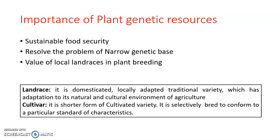Why are plant genetic resources important? It is very important to study them for sustainable food security. Here we have two key words: 'sustainable' means to make something continuously available for future generations, and 'food security' means the availability of food for everyone. So sustainable food security means food is available to the current generation and to future generations as well. We must use plant genetic resources in a way that food production and yield are increased so that future populations have enough food.